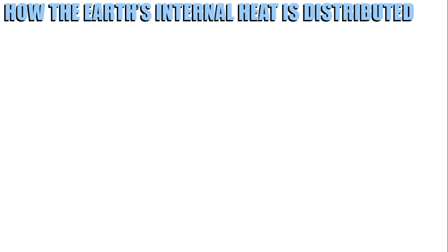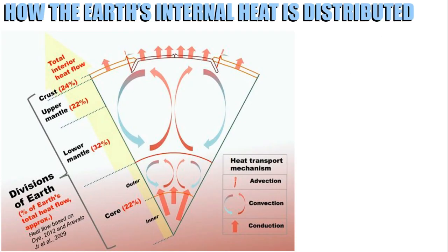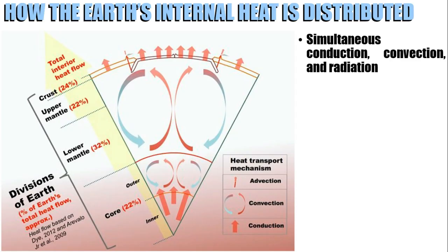Now, the question is, how is the earth's internal heat distributed? This figure shows the distribution of earth's internal heat. As you can see, there is simultaneous conduction, convection, and radiation.